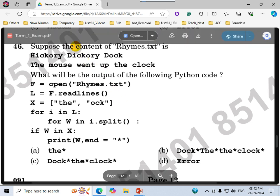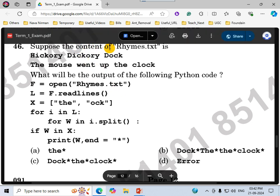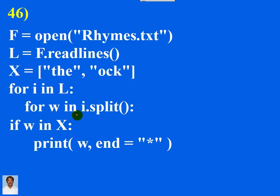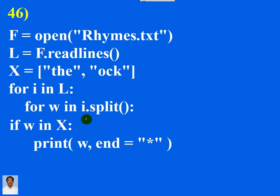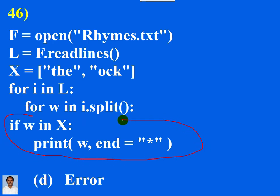Question number 46. Suppose the content of rhymes.txt is the one given here. What is the output of this program? It's an output type of question. If you observe the program code, you can see that the indentation given here is wrong. So if the indentation is taken as wrong, the answer will be D, error. Now let us correct the indentation and try to solve the problem.